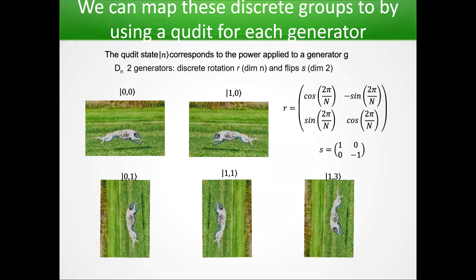Similarly, if we have something more complicated like a non-abelian group such as D4, we can split these generators up so we have one qudit corresponding to states on one generator, and another qudit corresponding to a power of another generator. For example, the first qudit could correspond to whether a flip has been applied to our state, and the second qudit corresponds to what rotation we're at around a circle. These extensions can be mapped to higher-dimensional groups, but I only have ten minutes so I can't go into more detail.